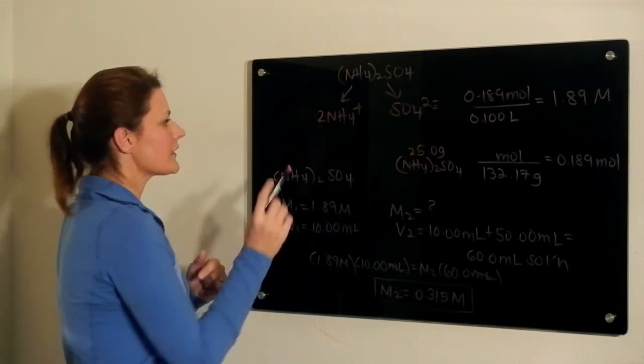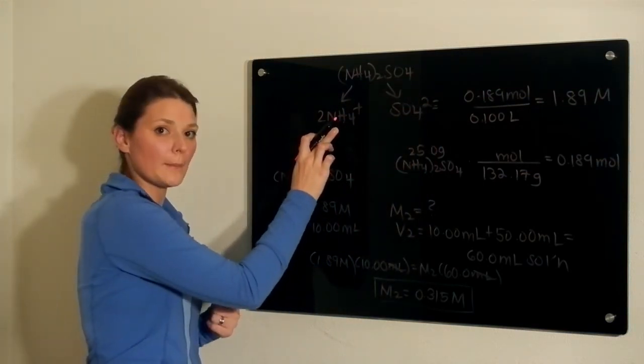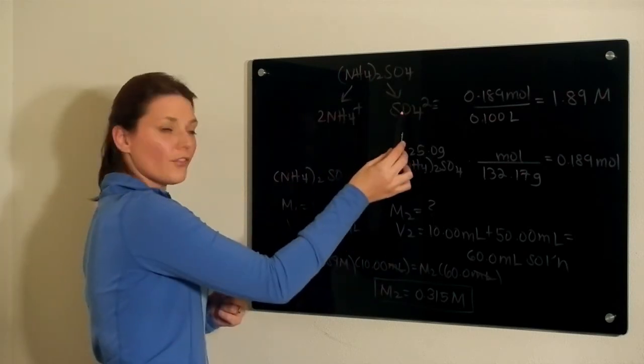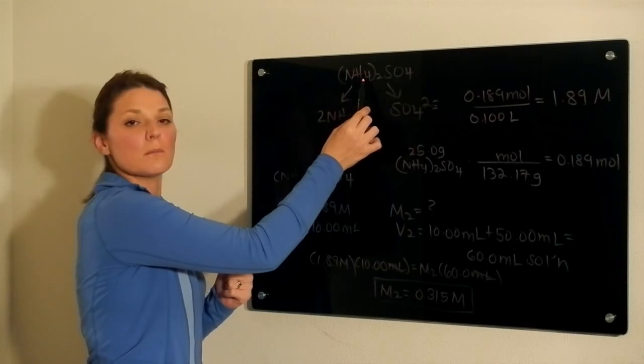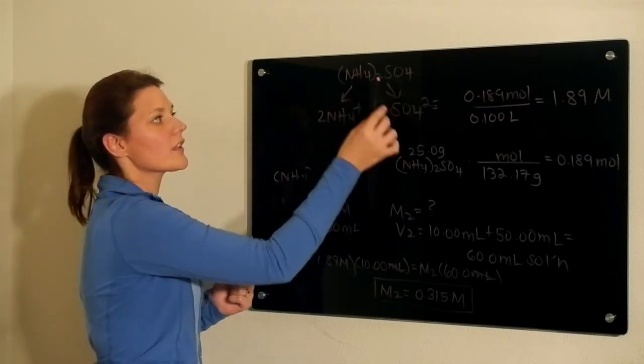This means that the concentration of ammonium is twice that of sulfate. And sulfate would have exactly the same concentration as ammonium sulfate because of the 1 to 1 mole ratio.